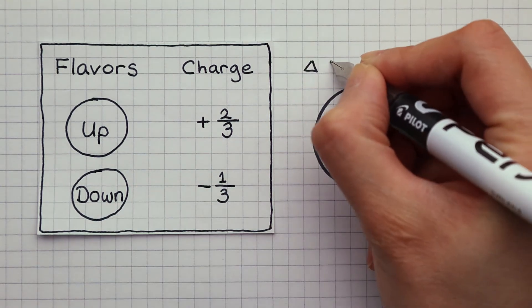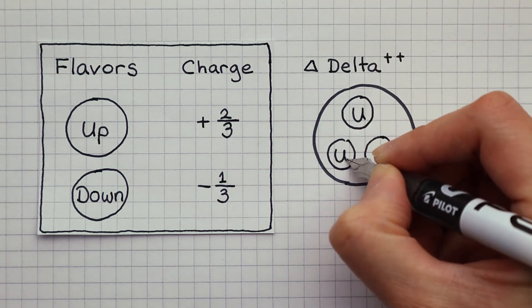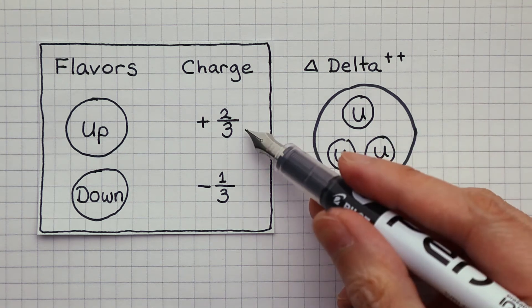A delta plus plus particle is another example of a baryon. It is made of three up quarks. That makes a total charge of plus two.